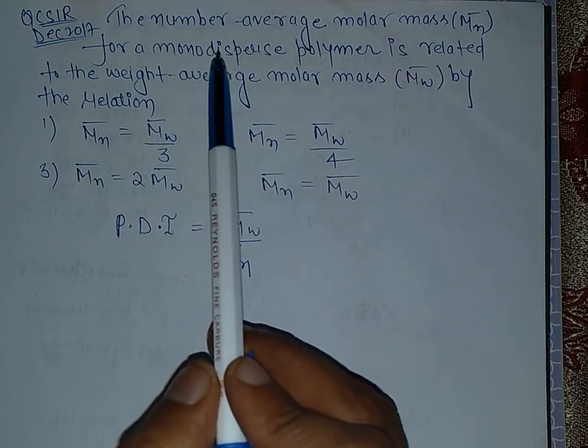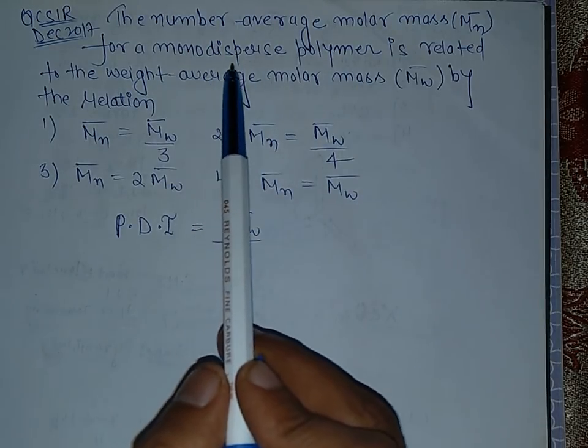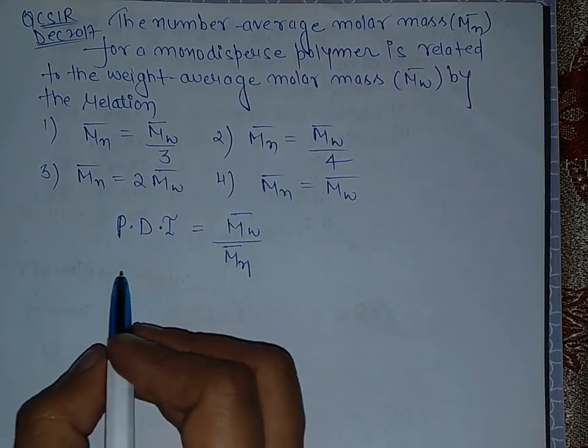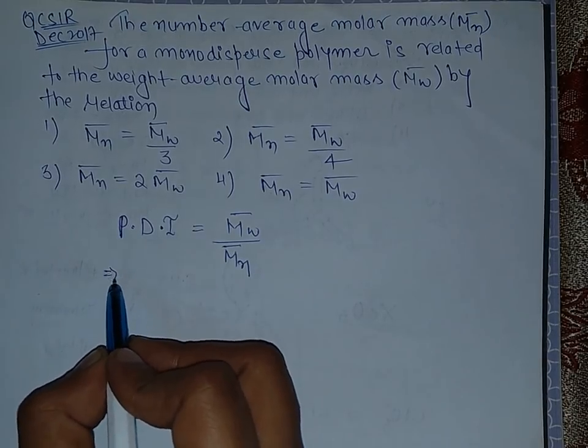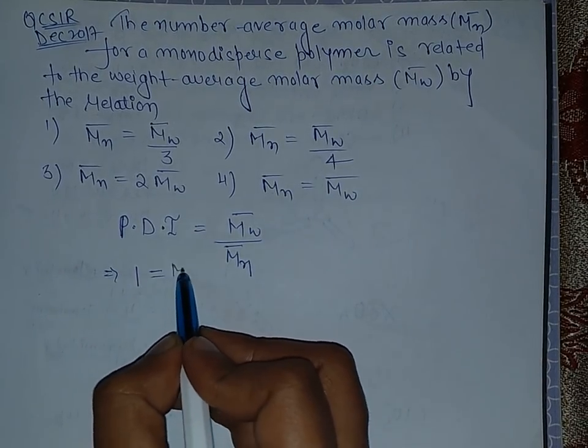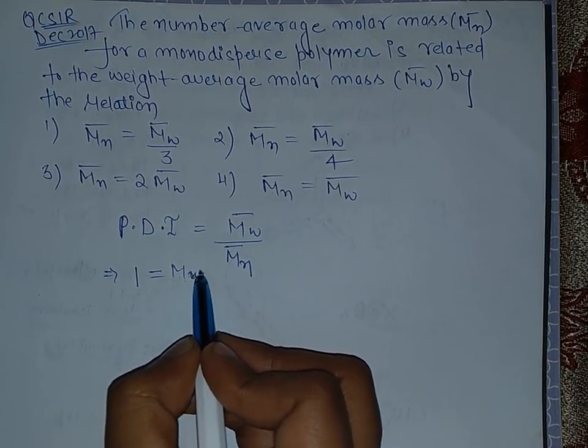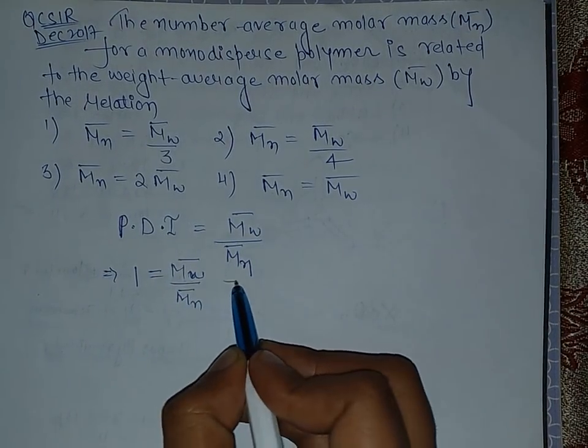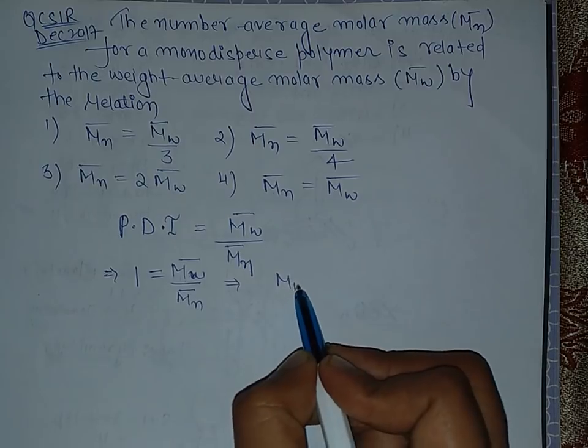In the question it is given that for a monodisperse polymer, the PDI polydispersity index is 1. So this is 1 equals to M weight average upon number average, which gives us weight average equals to number average.